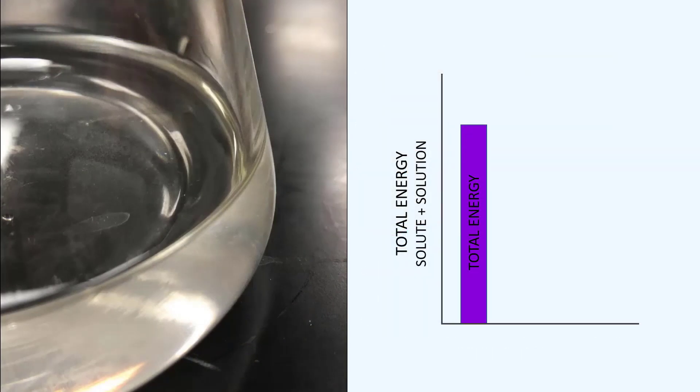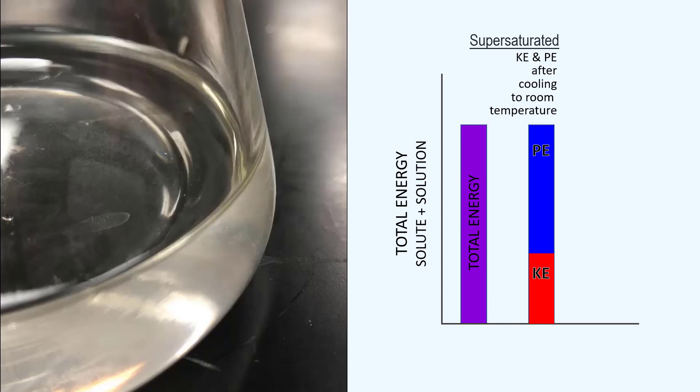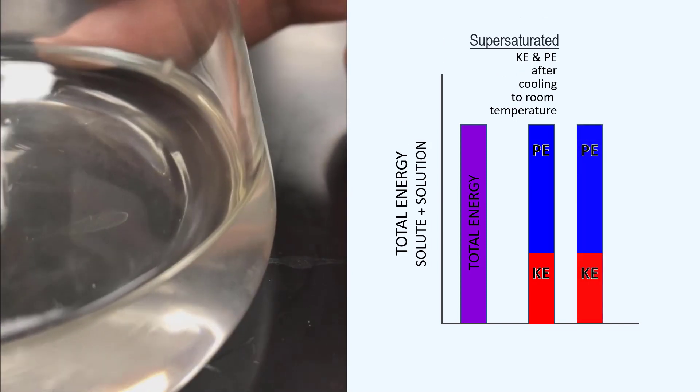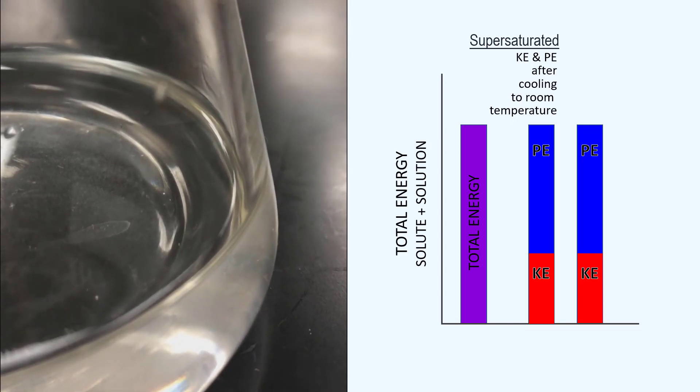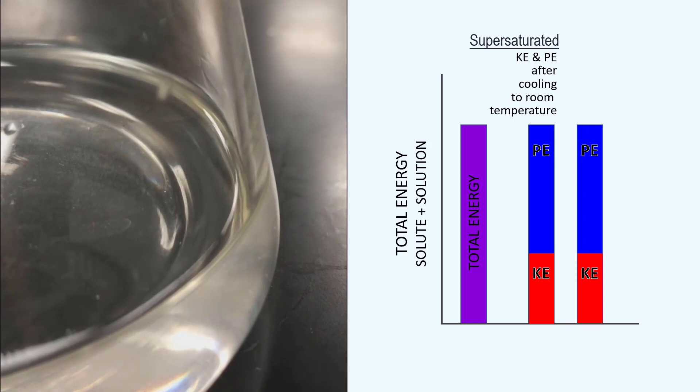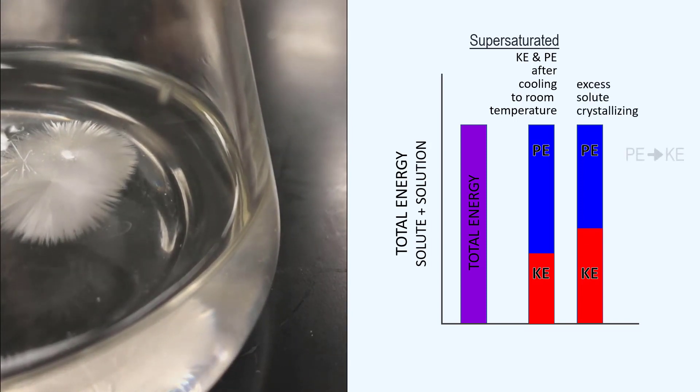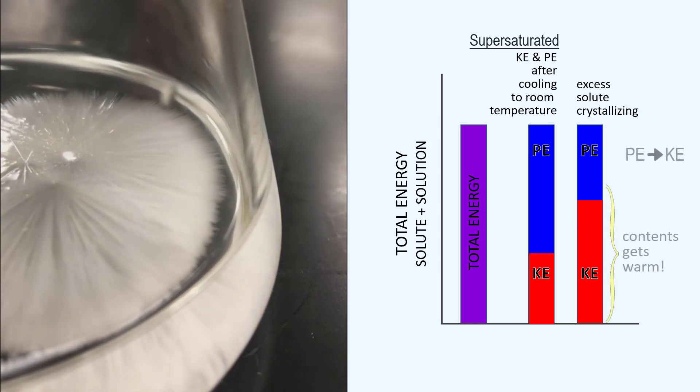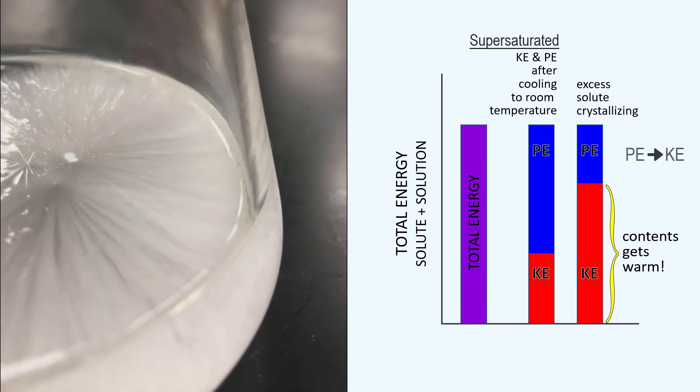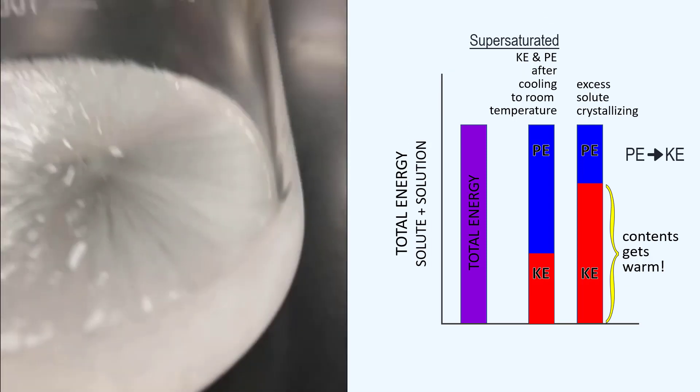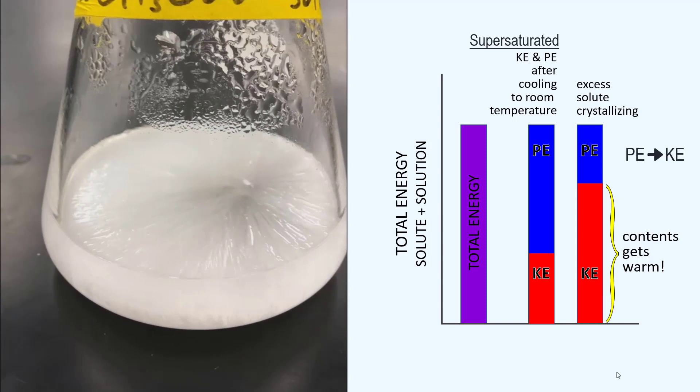The energy changes that take place here are very interesting when looked at from the perspective of changing potential and kinetic energies. In the cooled solution at room temperature, the solute above solubility should solidify to a more favorable position—the crystalline form, which is a lower potential energy. However, it needs a path to get to that lower potential energy, which is provided by a small seed crystal. But where did that lost potential energy go? Law of conservation of energy—it went to kinetic energy. The particles solidifying increased their kinetic energy, which means an increase in temperature. The solidifying sodium acetate gets quite warm.